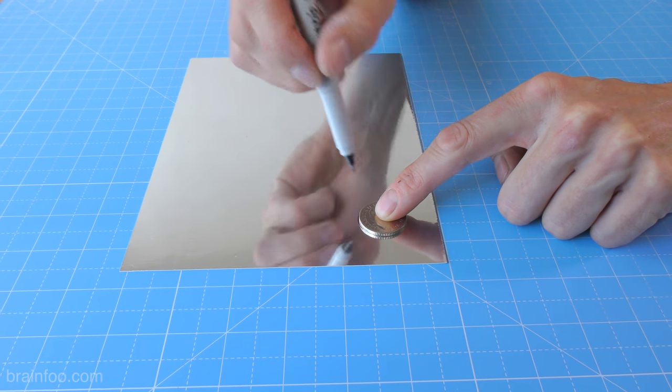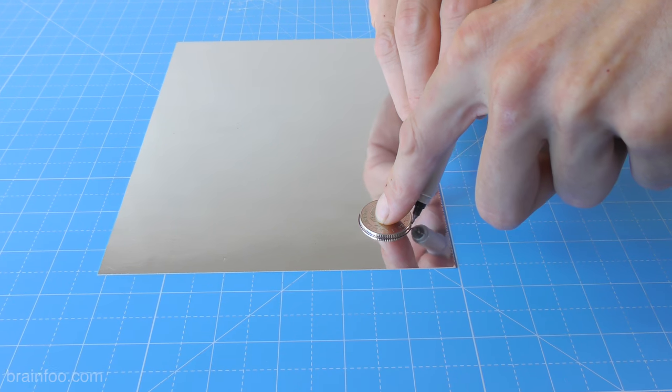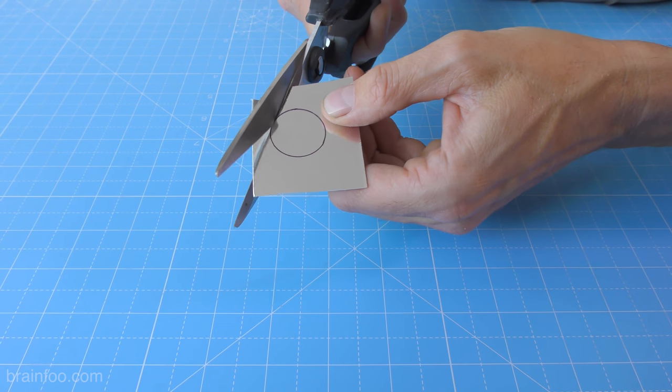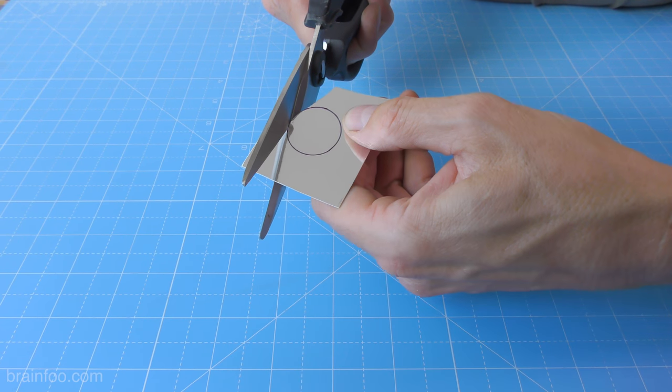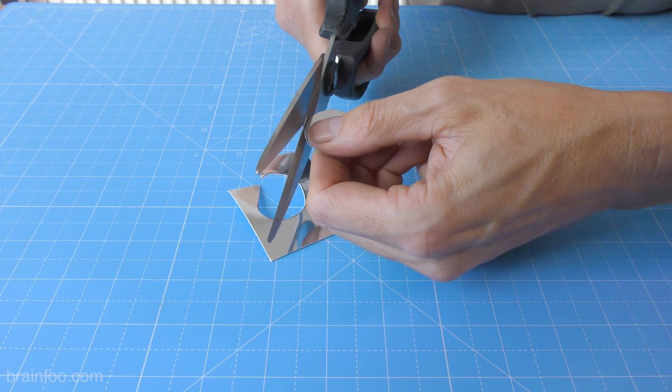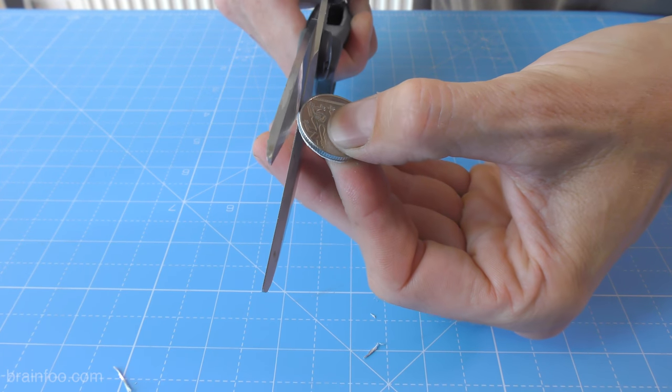Using the same template as earlier mark around it onto some silver card. And if you can't find any card that's thick enough like I couldn't, you can always glue two halves of a thin sheet together with a pritt stick. Cut around the inside of your marks with a decent pair of scissors. To trim it up nice and round consider holding the template and the card together and trim off any sticky outy bits.